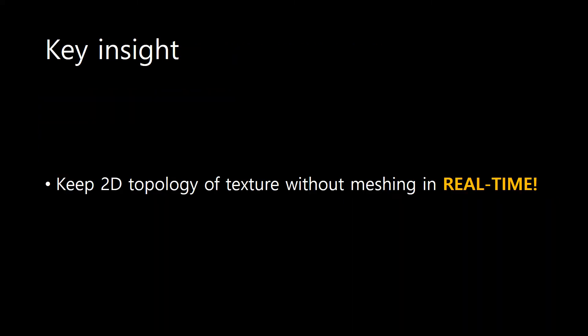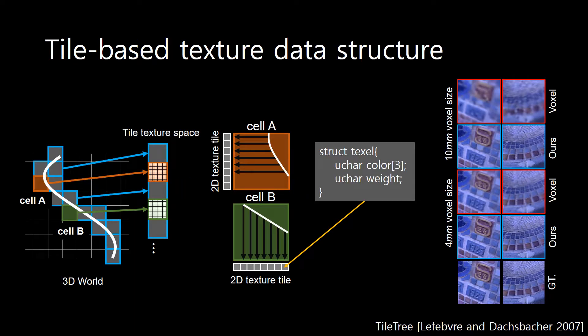To achieve our goal, our key insight is to keep the 2D topology of the texture information by avoiding explicit meshing. We first propose a tile-based texture data structure specially designed for real-time 3D scanning. Inspired by the tile tree structure, we map texture to geometry by projecting an implicit surface to the assigned texture tile along the face direction. Our texture framework achieves high resolution even at low voxel resolution.